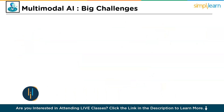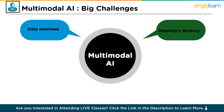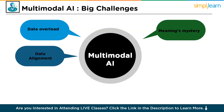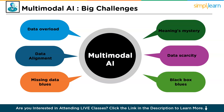Let's see what are the big challenges of multimodal AI. Multimodal AI is powerful but faces hurdles. The first is data overload — managing and storing massive, diverse data is expensive and complex. The second is meaning mystery — teaching AI to understand subtle differences in meaning, like sarcasm, is tricky. The third is data alignment — ensuring data points from different sources align is challenging. The fourth is data scarcity — limited and potentially biased datasets hinder effective training. The fifth is missing data — what happens when data is missing, like distorted audio. The sixth is the black box problem — understanding how AI makes decisions can be difficult. These challenges must be addressed to unlock the full potential of multimodal AI.